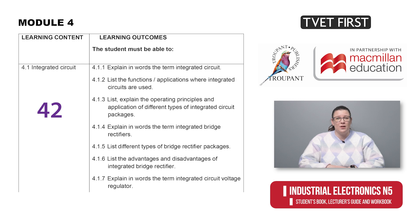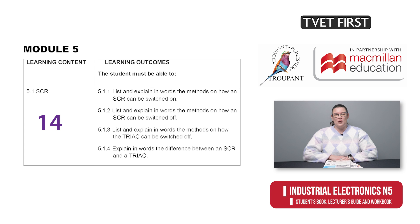This module has a total of 42 learning outcomes. The old syllabus includes diacs and quadrax, whereas Module 5 in the new syllabus only deals with SCRs and triacs. For triacs, students now only need to compare them with SCRs and know how to switch them off. The applications of closed loop phase control systems are also required.